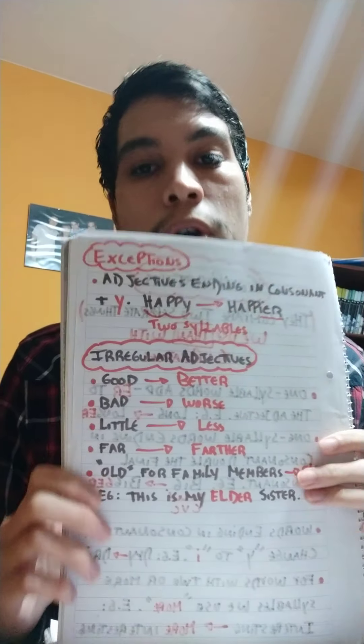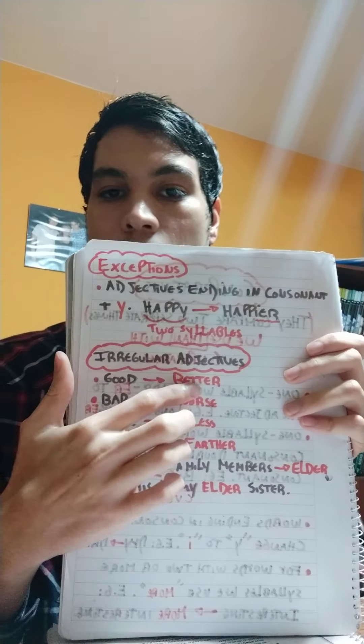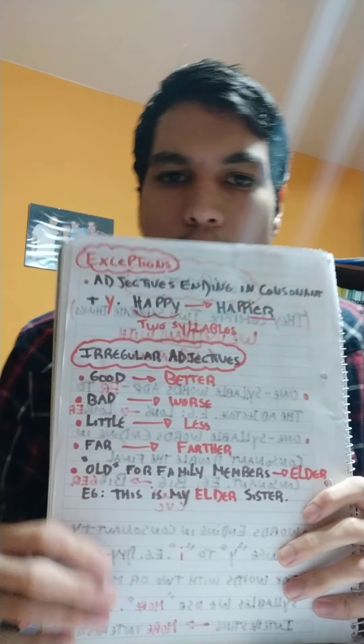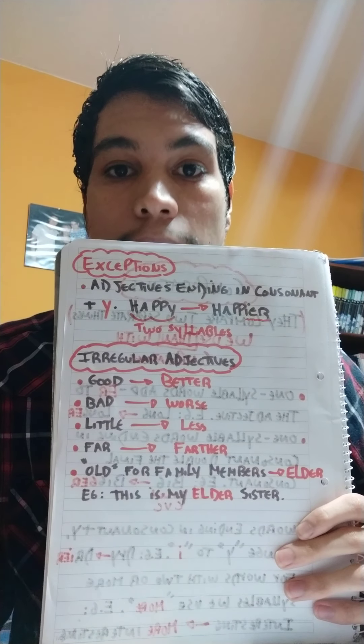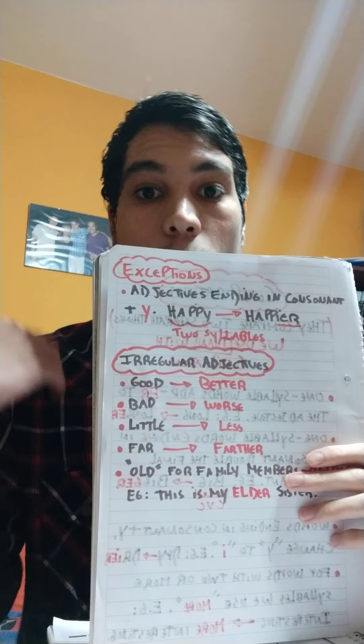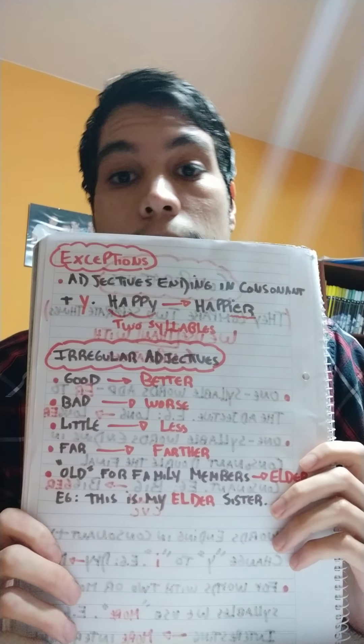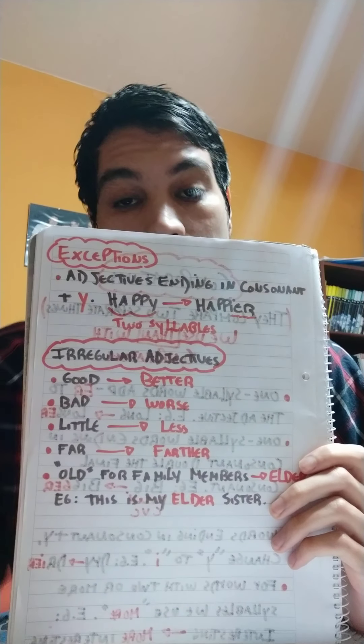Irregular adjectives: hay algunos adjetivos que cambian completamente. For example: good → better, bad → worse, little → less, far → farther. And old — when we are talking about family members, cuando hablamos de los miembros de nuestra familia, we use 'elder'. If you want to say your sister is older than you, you say: this is my elder sister — esta es mi hermana mayor.